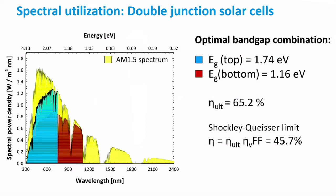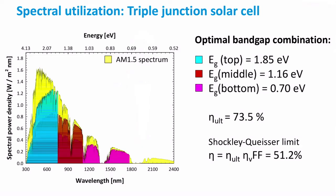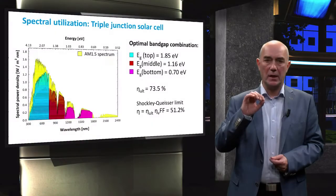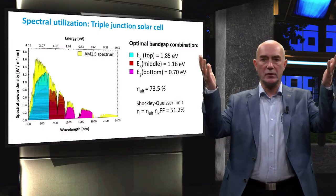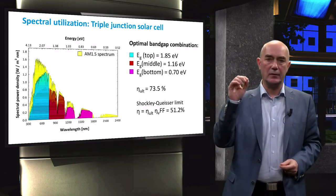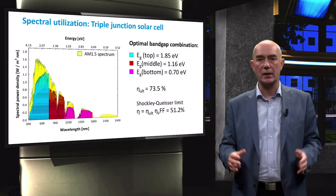When applying the Shockley-Queisser limit, this double junction solar cell can achieve a maximum conversion efficiency of 45%. We can stack one more solar cell to make a triple junction solar cell. The blue area represents the fraction of spectrum utilized by the top cell, the brown area represents the fraction absorbed by the middle cell, while the pink area is the fraction absorbed by the bottom cell. By tuning the bandgap of the absorber layers in a triple junction cell, we raise the ultimate conversion efficiency above 70% and the theoretically achievable conversion efficiency to 51%.